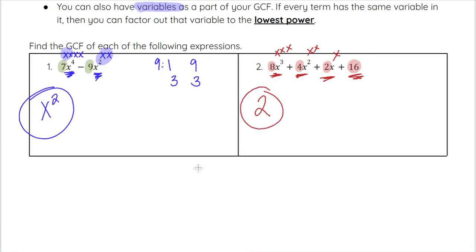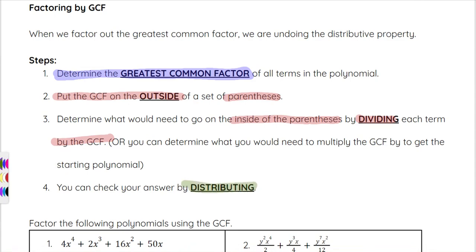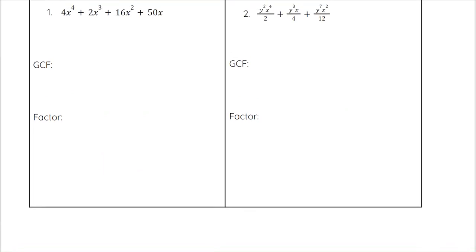So 2 is actually going to be our GCF here. Sometimes we see a GCF that has both a number and a variable, and we'll see that in a minute. Now let's go ahead and do what we just did. Our first step to factoring with the GCF is to find or determine the greatest common factor. Then we put that GCF on the outside of parentheses, divide each term by the GCF to find what goes inside, and we can always check our answers by distributing.